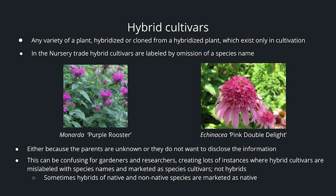Hybrid cultivars are any variety of a plant hybridized or cloned from a hybridized plant, which exists only in cultivation. In the nursery trade, hybrid cultivars are labeled by omission of the species name — so you may see Monarda Purple Rooster or Echinacea Pink Double Delight. This is either because the parents are unknown or they do not want to disclose the information. This can be confusing for gardeners and researchers, creating many instances where hybrid cultivars are mislabeled with species names and marketed as species cultivars rather than hybrids. Sometimes even hybrids of native and non-native species are marketed as native plants.